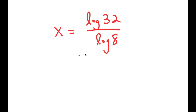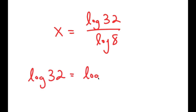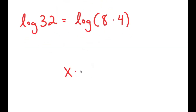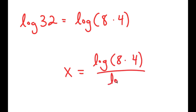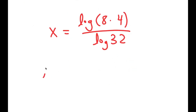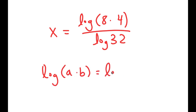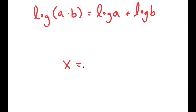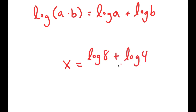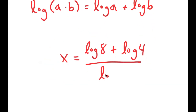Now, log of 32 is the same thing as log of 8 times 4. So I get log of 8 times 4 over log of 8. And if I have something in the form log of a times b, this is equal to log a plus log b. So in this case, this is going to equal log of 8 plus log of 4, all over log of 8.